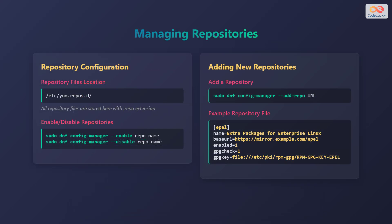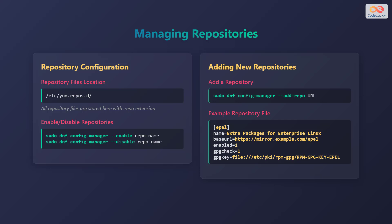Let's explore how to manage repositories. Repository configuration files are stored in the /etc/yum.repos.d/ directory with a .repo extension. To enable or disable a repository, use sudo dnf config-manager --enable repo-name or sudo dnf config-manager --disable repo-name. To add a new repository, use sudo dnf config-manager --add-repo followed by the URL of the repository.